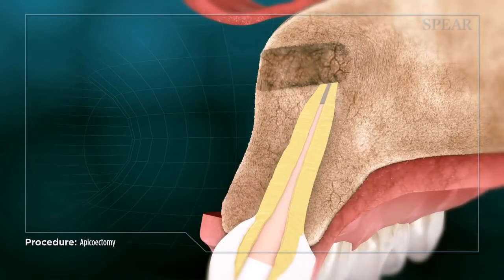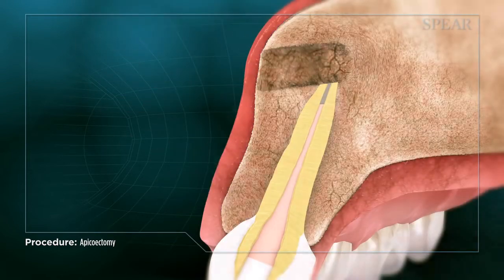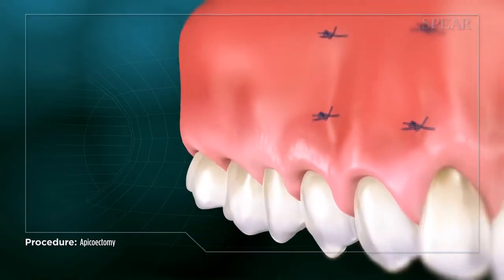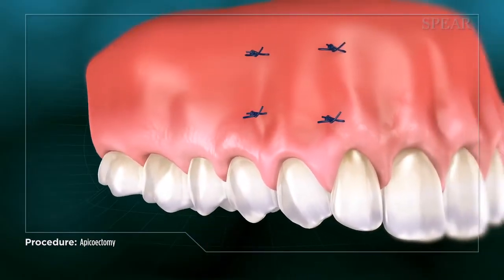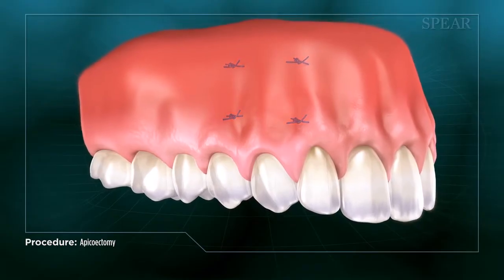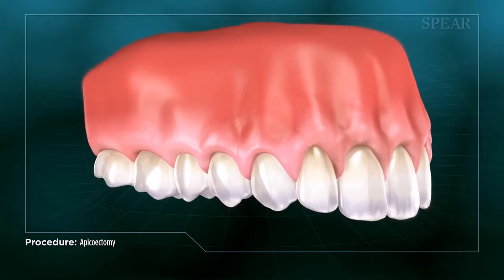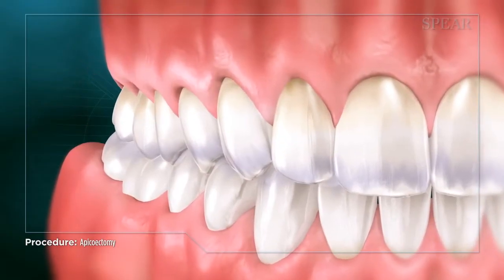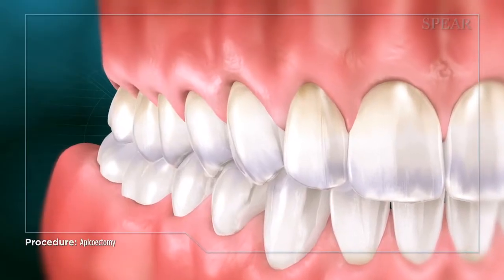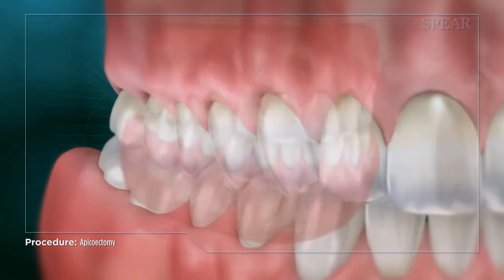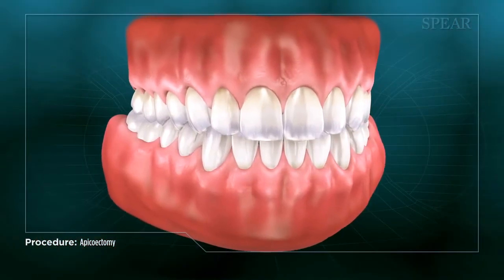Once this is complete, the area is closed up and left to heal. Healing for an apicoectomy depends on the severity of the infection and can range from months to a year to fully heal. With the infection removed and the root resealed, the tooth has been saved and restored to its natural function.